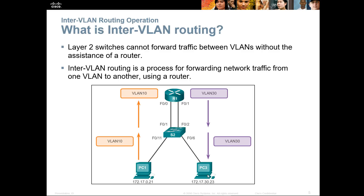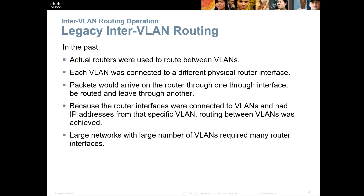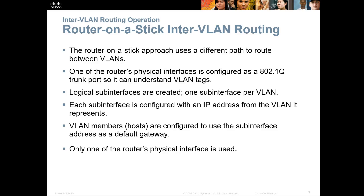In the past, routers were used to route between VLANs. Each VLAN was connected to a different physical interface on a Layer 3 device, normally a router. Because router interfaces were connected to VLANs and had IP addresses from those VLANs, routing between VLANs was achieved. The larger the network grew, the more complex the requirements became. Router-on-a-stick uses a different pathway — it allows us to use a trunk and configure an 802.1Q trunk port, creating a pathway between our router and switch so one link carries all VLANs.